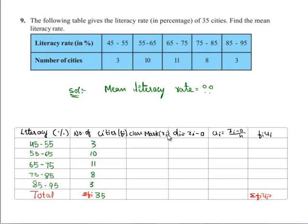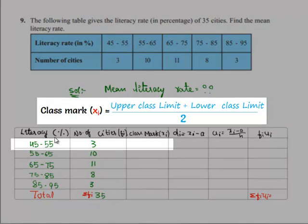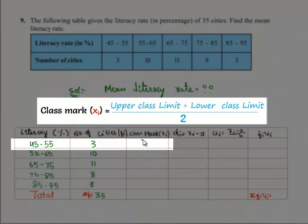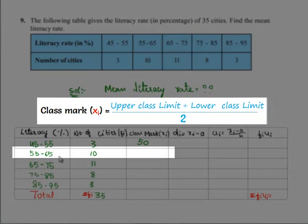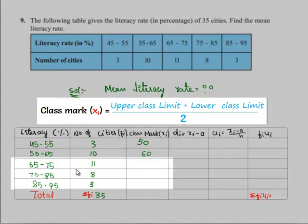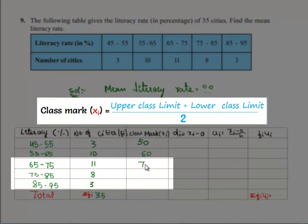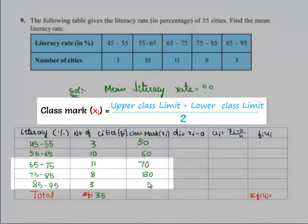Now considering the class marks we have to find xi. Hence 45 plus 55 by 2 is 50, 55 plus 65 by 2 is 60. Similarly if we calculate we get 70, 80 and 90.